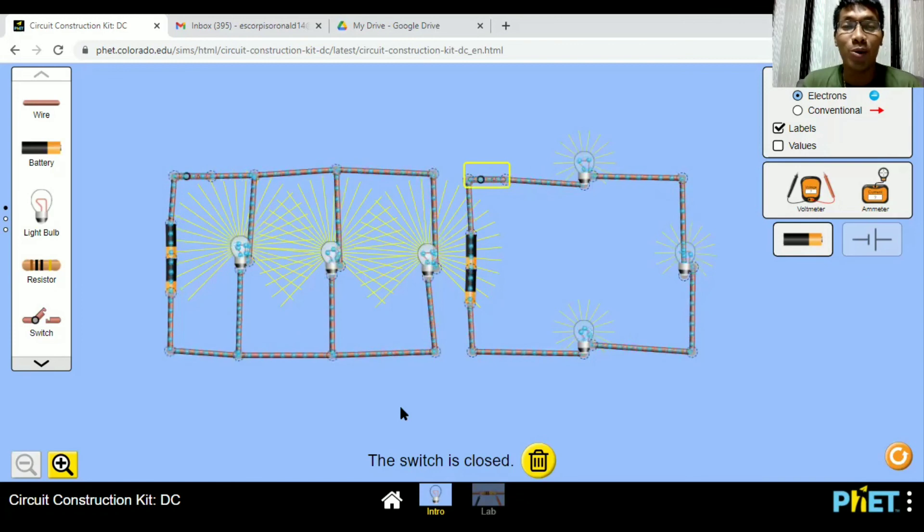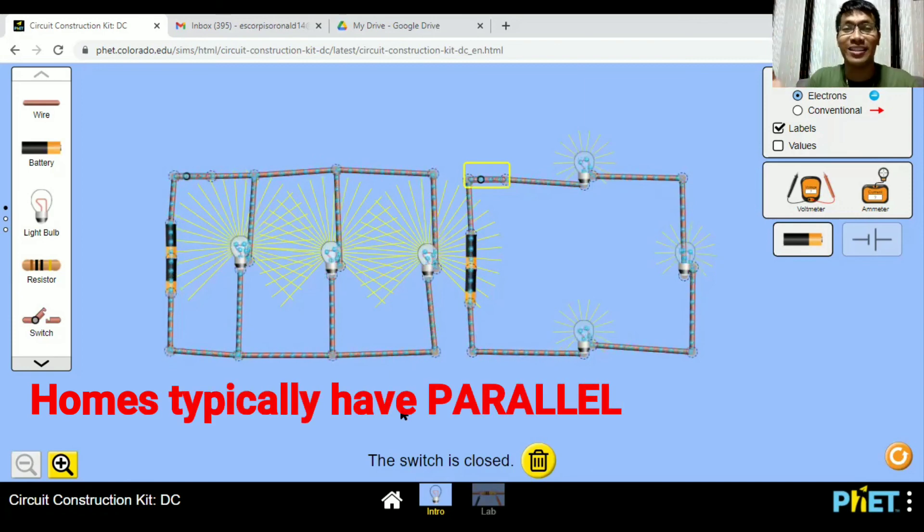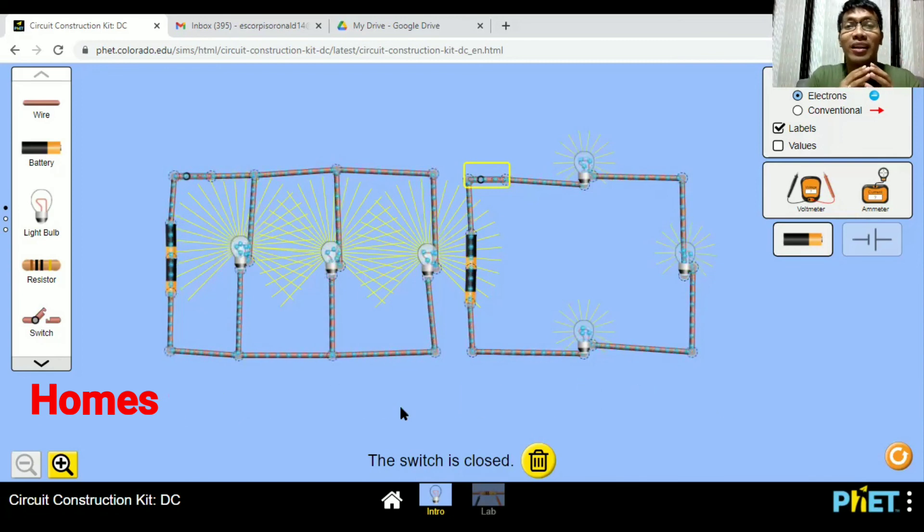In our home, mostly the connections are in parallel. Because try to think of it, if our appliances are connected in series, when one malfunction, then the rest will not work. That's why typically in a household, the circuit that is commonly used is the parallel.